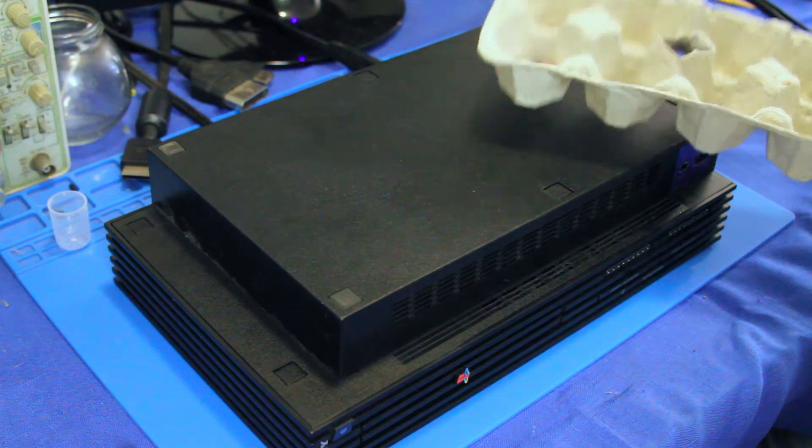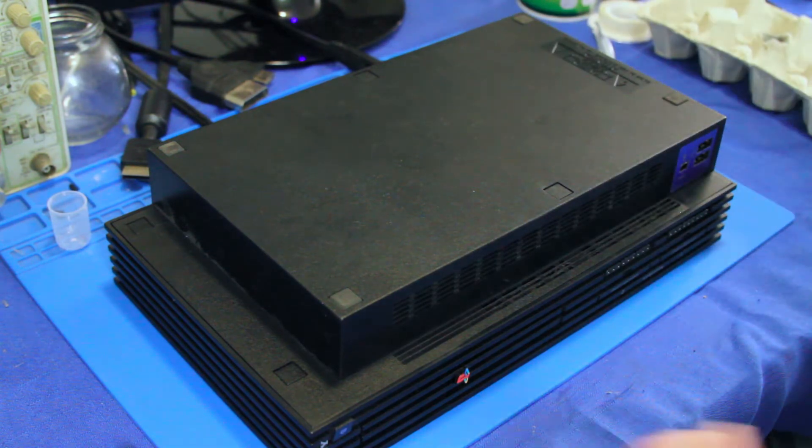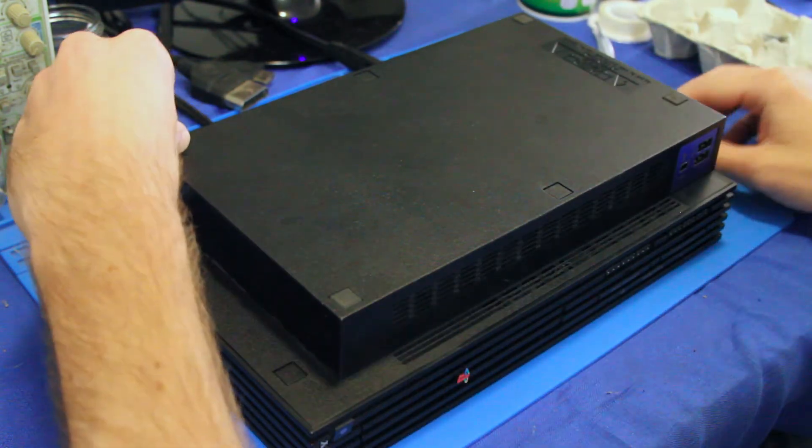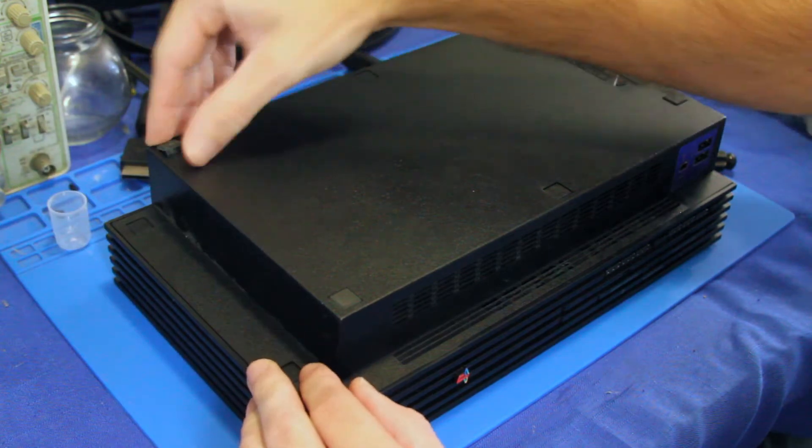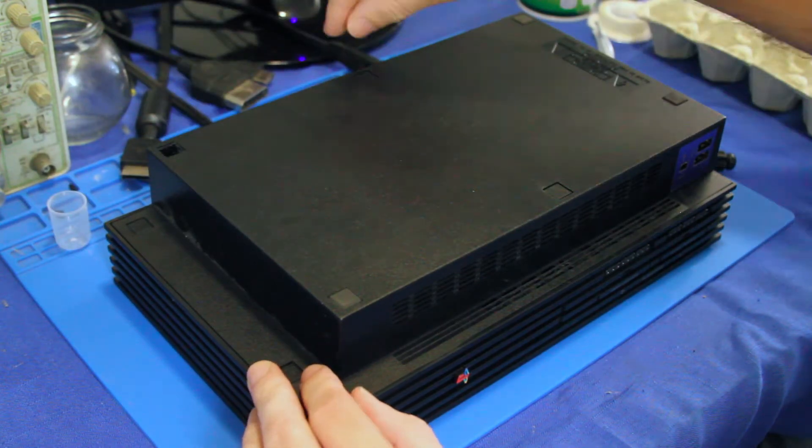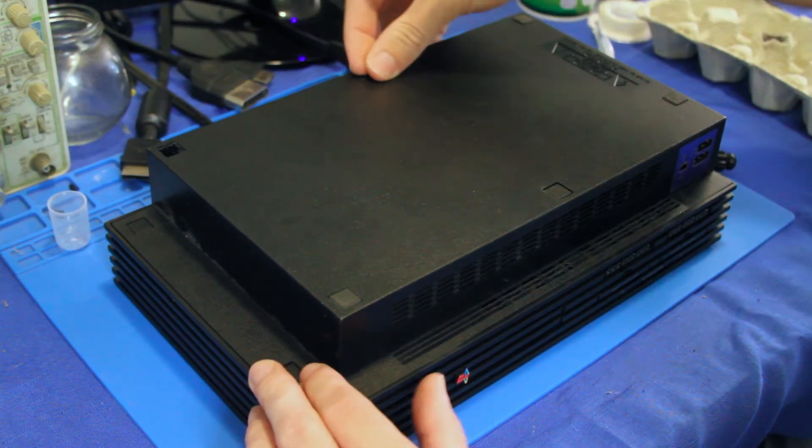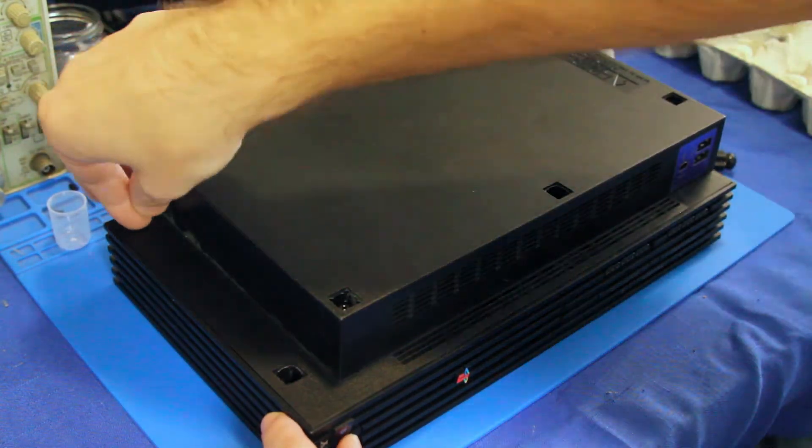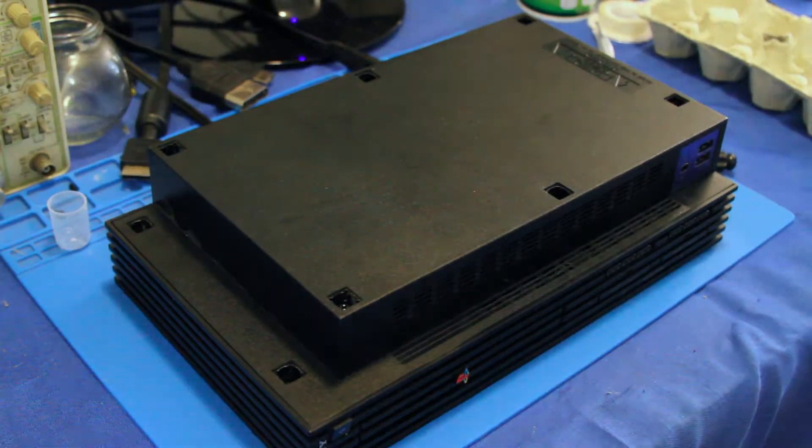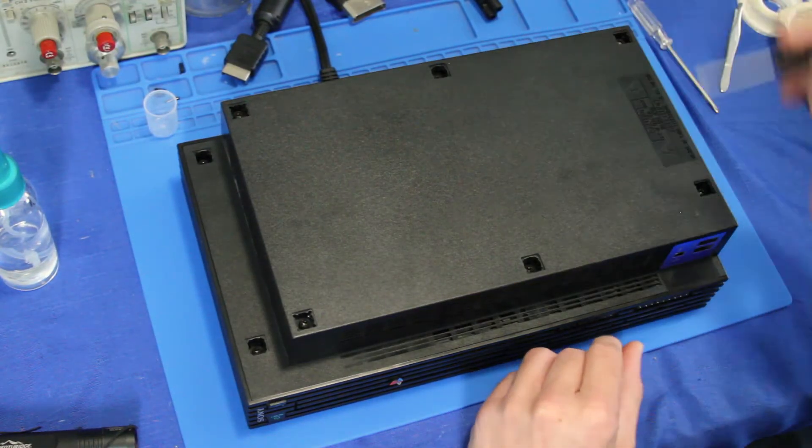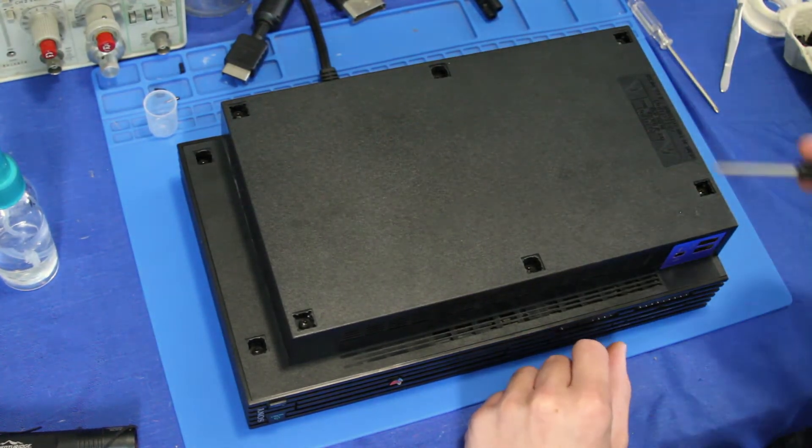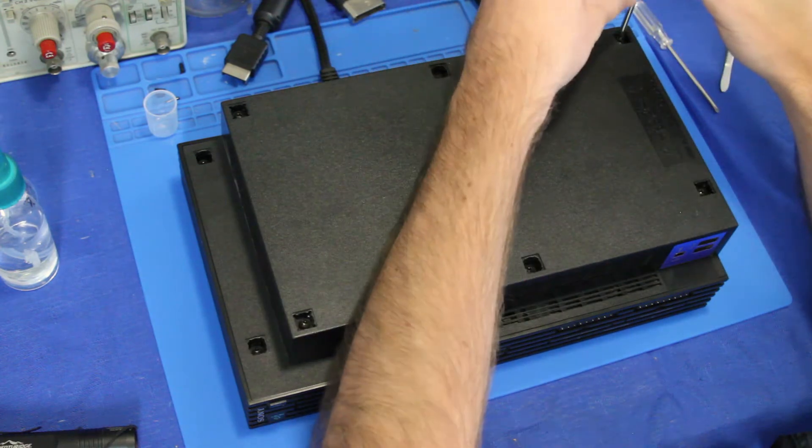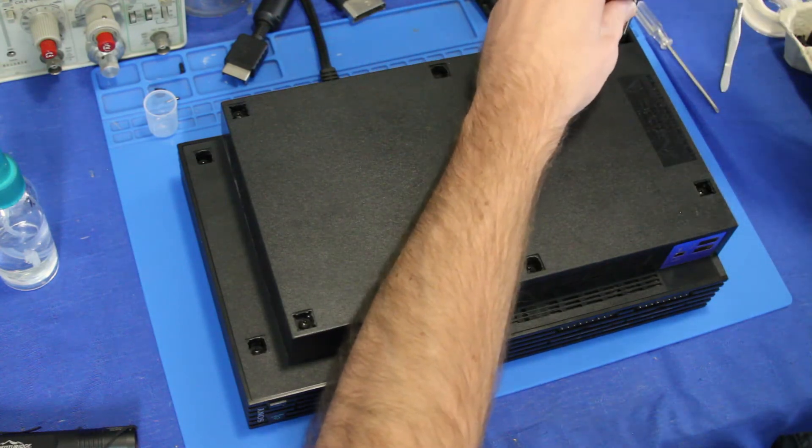First things first, grab your handy dandy egg carton and the screwdriver. We're going to start by taking off all the little feet on the bottom. And the next thing we're going to do, we have eight screws we have to remove. Just pay attention to which ones are the longer ones, and it's going to be model specific.